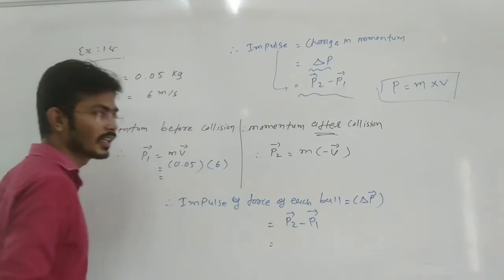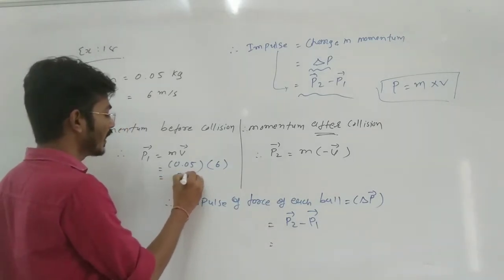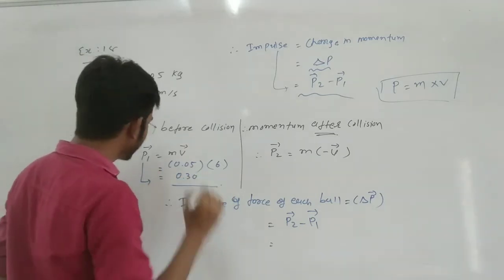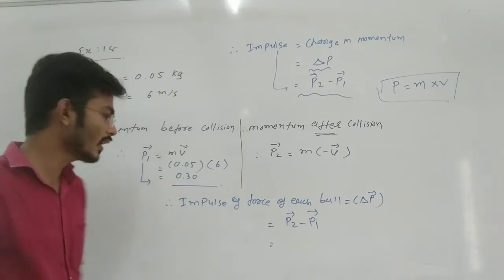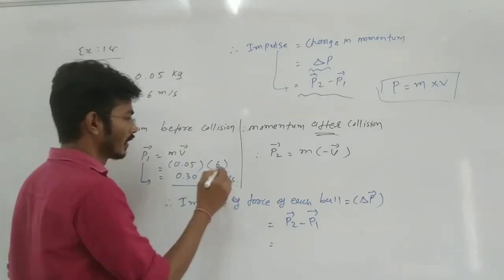That means 5 multiplication 6, how many? 30. So because of that reason, we have the answer 0.30. And what is the unit of the momentum? Momentum unit is kg meter per second.